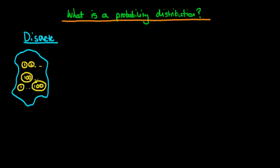We assume there are many of these balls, and we put our hand in and take one out at random. If we call the value on that ball x, we want to think about what would be the probability of that particular value actually occurring.